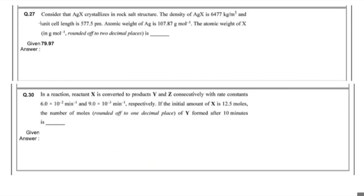The next question: AgX crystallizes in the rock salt structure. Given the density, unit cell length, and atomic weight of Ag, find the atomic weight of X. Using the density formula ρ = (Z × M) / (a³ × N_A), the answer comes out to 79.97, which is bromine. So X is bromine.